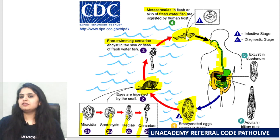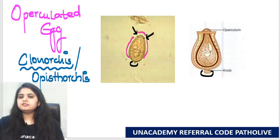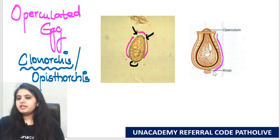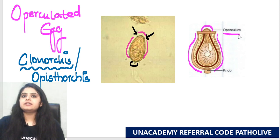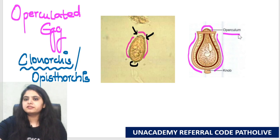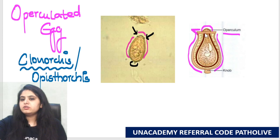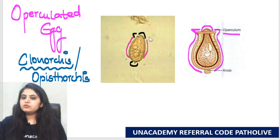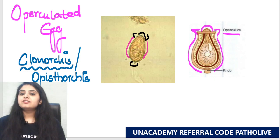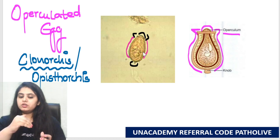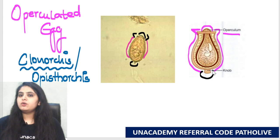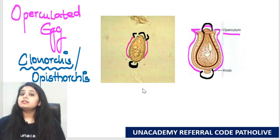What about this egg — how does it look? This is the classical book description. It's a very beautiful flask-shaped egg and it has a lid on the top called an operculum — an operculated egg. All trematodes usually have operculated eggs, and the egg is resting on these shoulders. Can you see the lid resting on the shoulders? The opposite end has a knob. So one end has a lid and the opposite end has a knob — that is the operculated, flask-shaped egg.